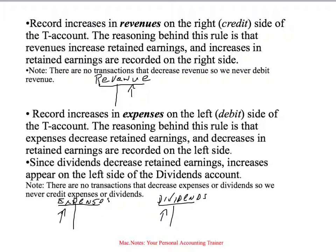Extending this to revenue, expense, and dividend accounts is even easier. Revenues are what we earn by providing our product or service, and revenues can only increase — there are never decreases in revenue. So on our revenue account, we record all increases on the right-hand side. Expenses decrease retained earnings, and a decrease in retained earnings is on the left-hand side, because a decrease in retained earnings decreases shareholders' equity. Therefore, we always record expenses on the left-hand side. The same goes for dividends — they also decrease retained earnings, so dividends are recorded on the left-hand side as well.